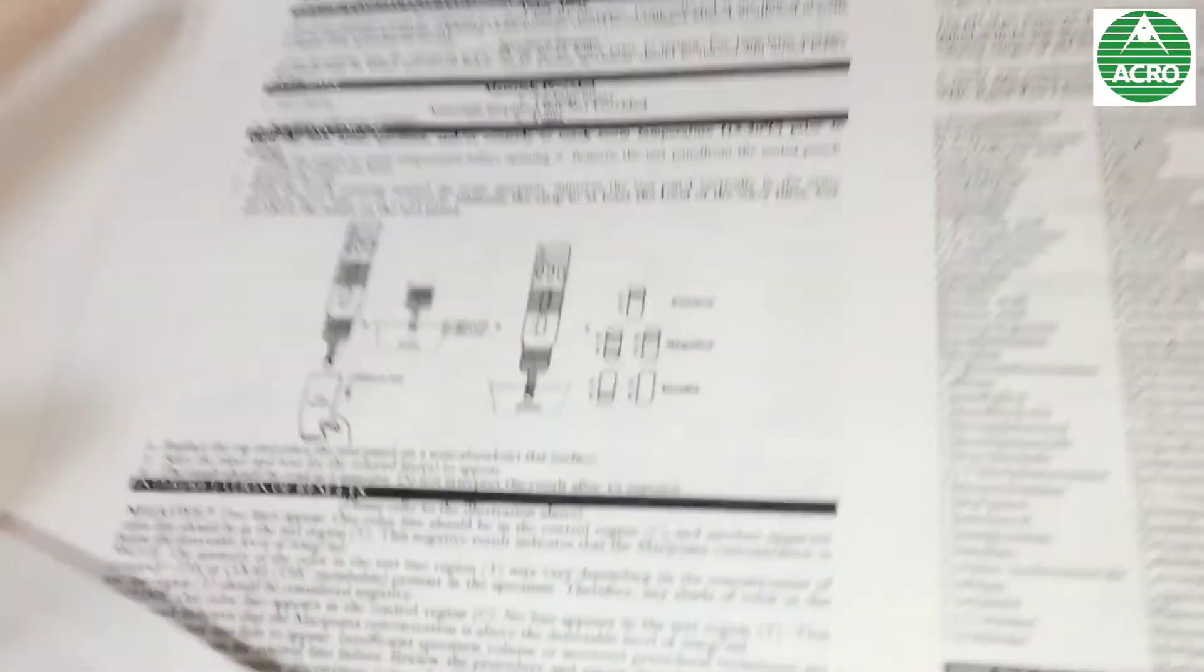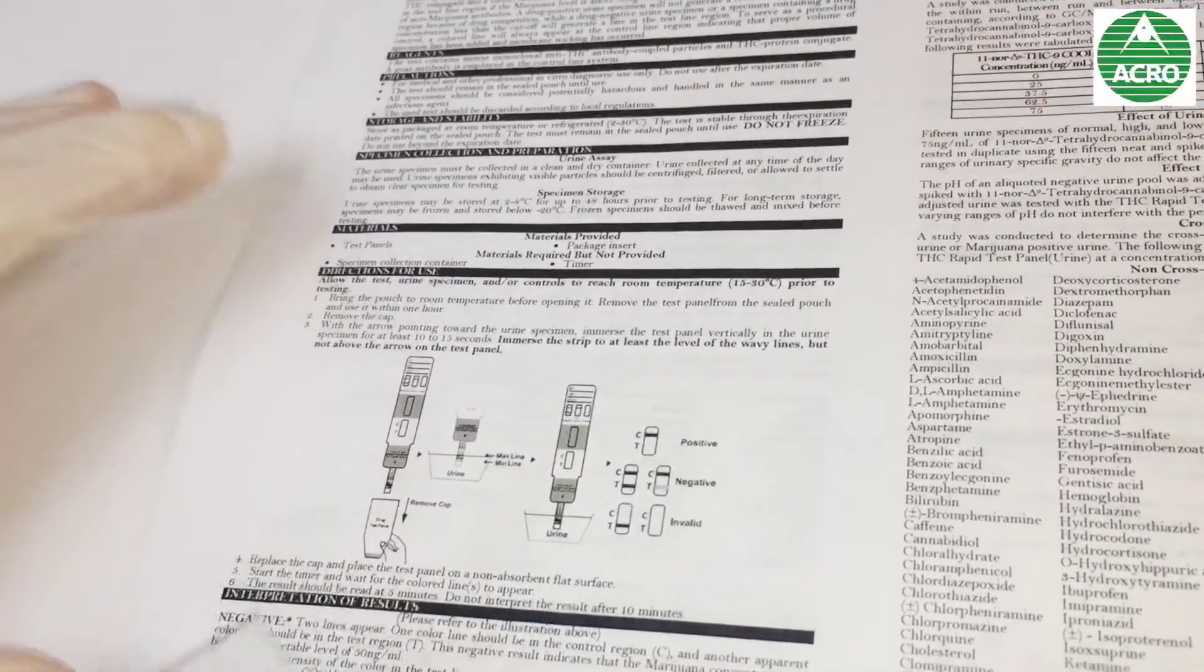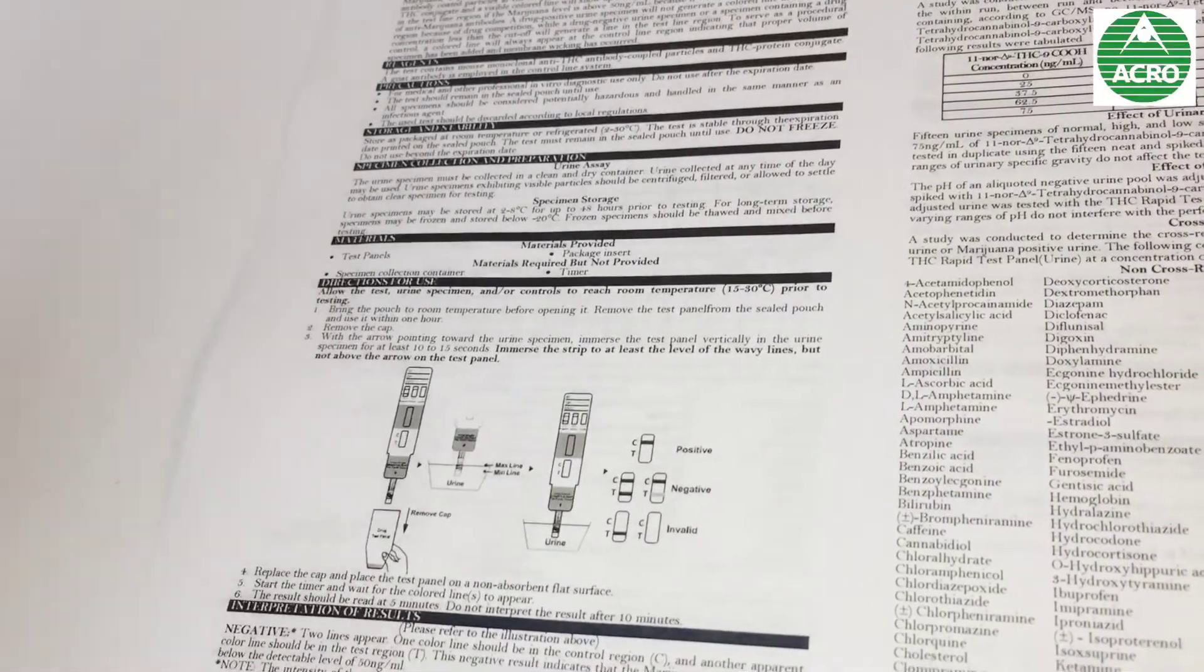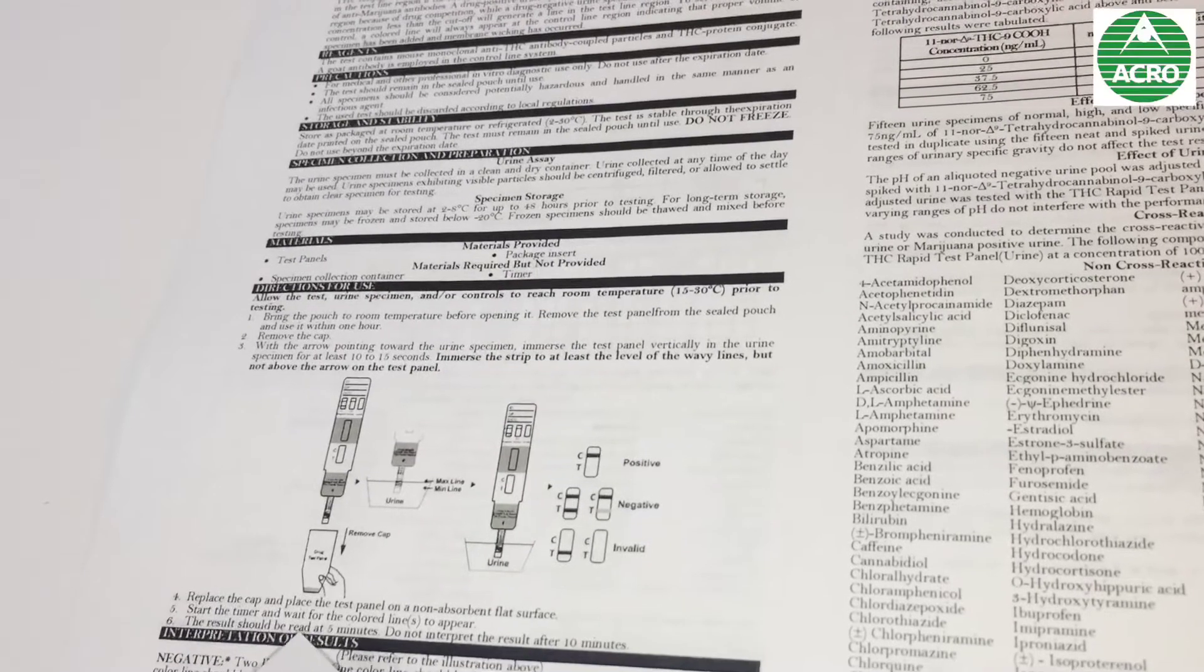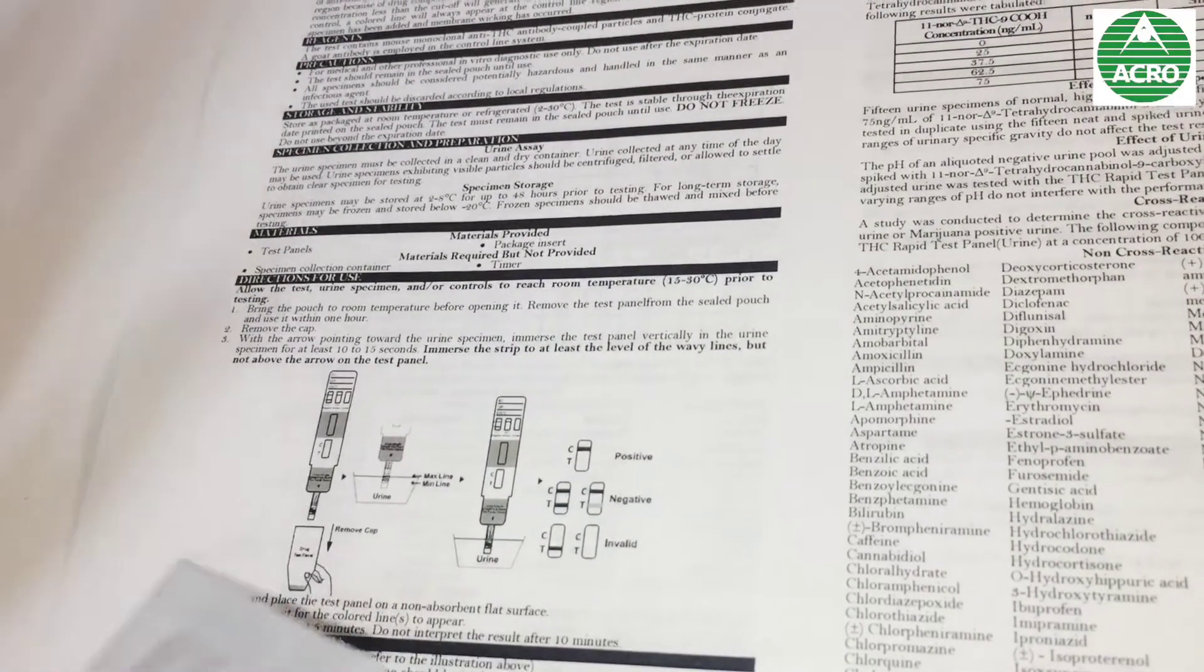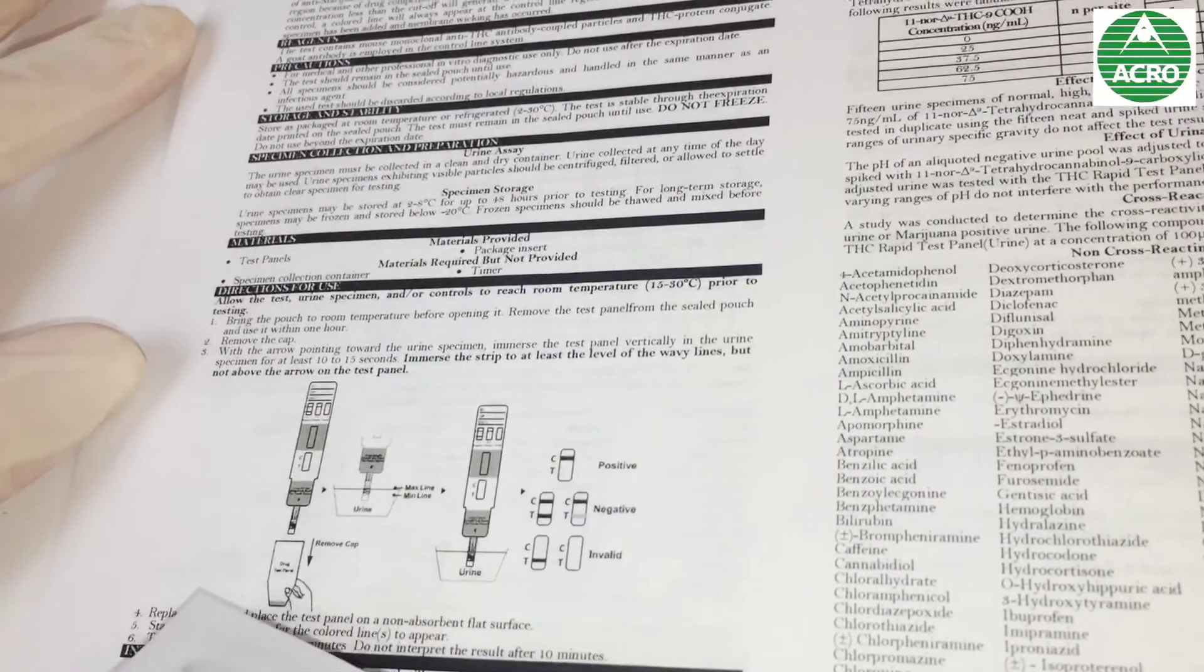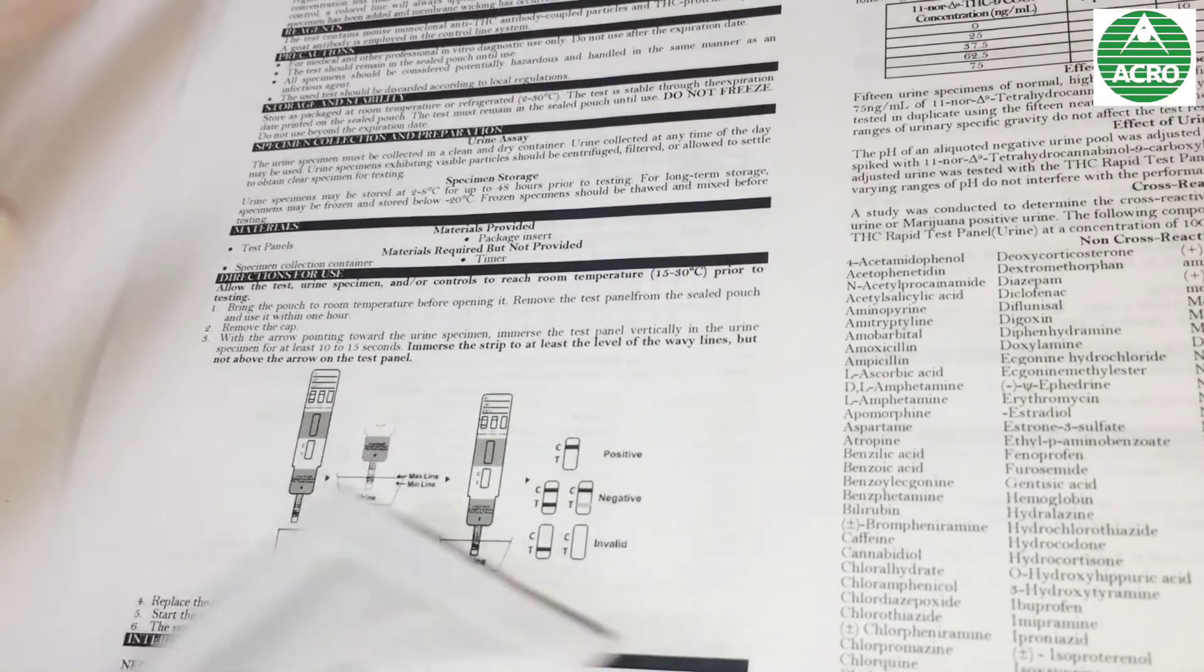First of all, let's review the directions for use. We have to open the panel and introduce the strip inside of the urine for like 10 to 15 seconds. After no more than five minutes, you have to read it. If you don't have the control line, that means you didn't do it properly. If you only have the control line, that means it's positive, and if you have both lines, control and testing line, that means it's negative.